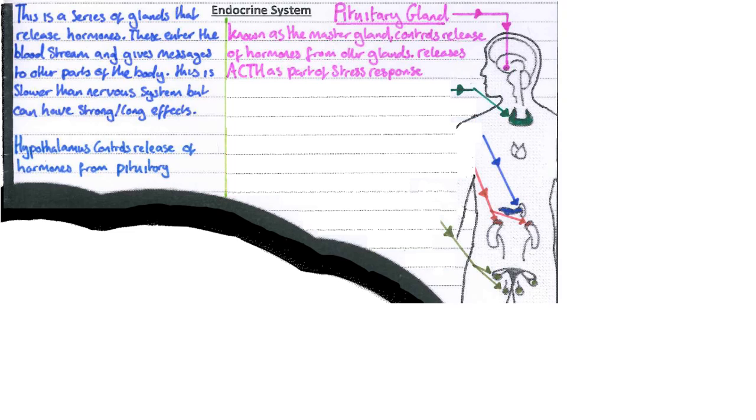The next gland we'll talk about is the thyroid gland, and you can see its location there on the diagram. It releases thyroxine. This is a multiple-use hormone. It will in the short term increase heart rate, but also in the longer term it will affect your growth rate.